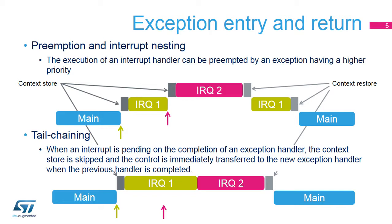When an interrupt request with low priority is raised during execution of an interrupt handler, it becomes pending. Once the current interrupt handler is finished, the context saving and restoring process is skipped and control is transferred directly to the new exception handler to decrease interrupt latency.